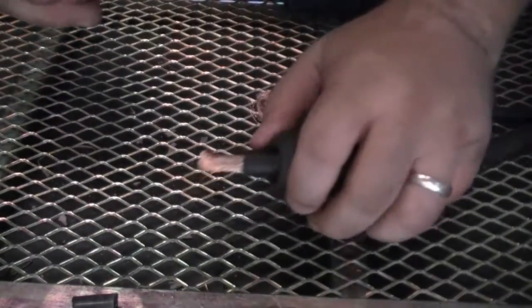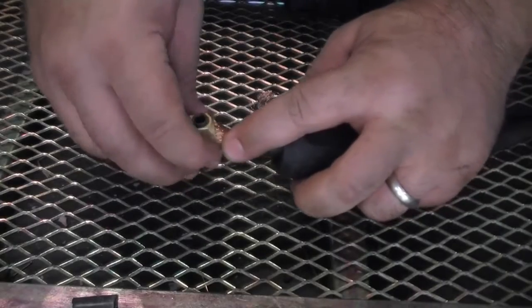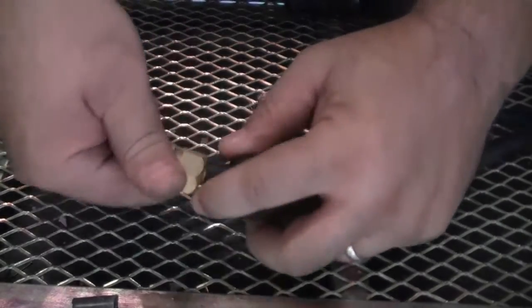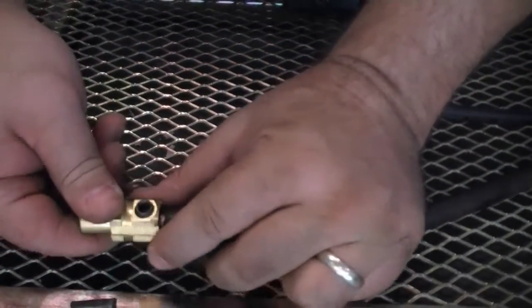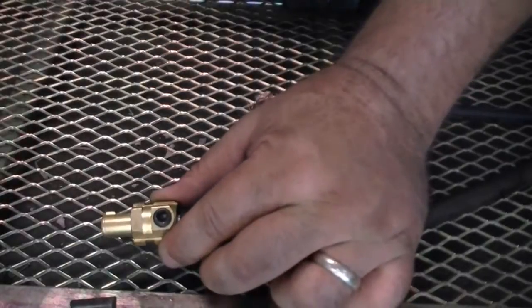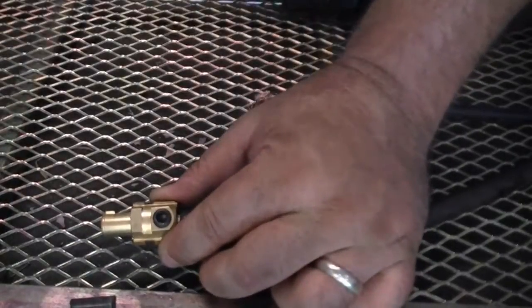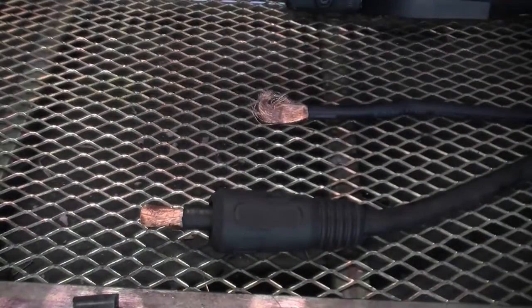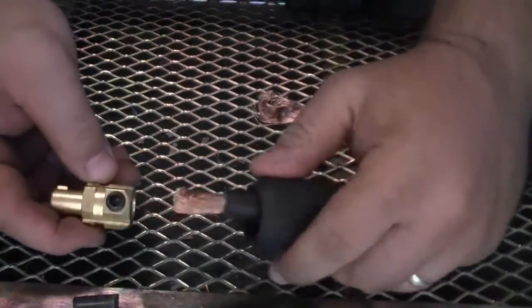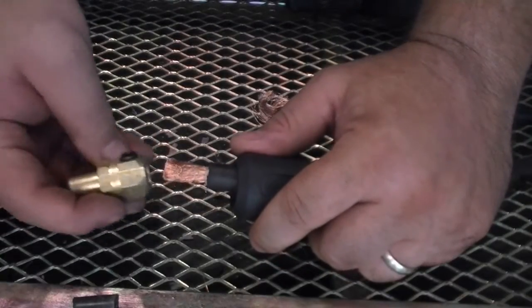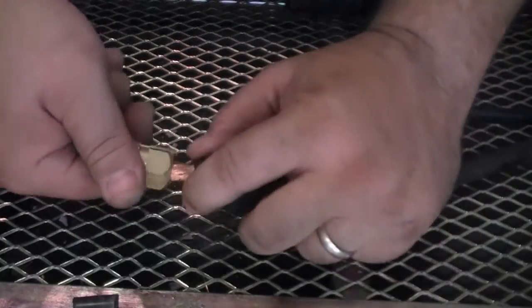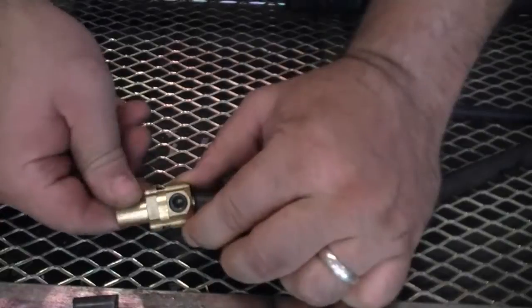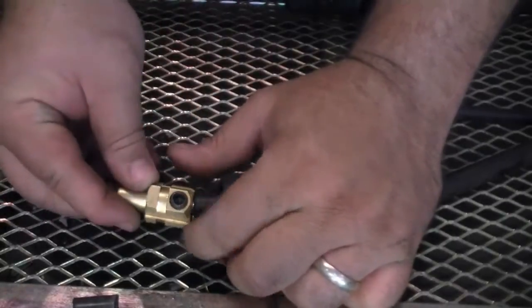Now slide the brass part of the connector down onto the cable. Make sure the cable is fully bottomed out in the connector or the cable could come loose after it's tightened. If everything has been done correctly the insulation should come to the edge of the connector.